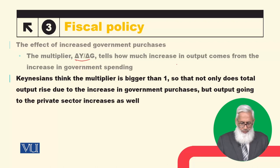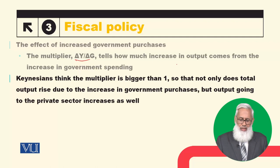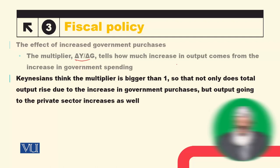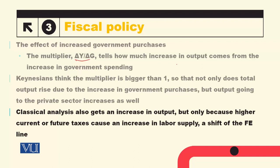Classical analysis also gets an increase in output, but only because higher current or future taxes cause an increase in labour supply and shift the FE line.